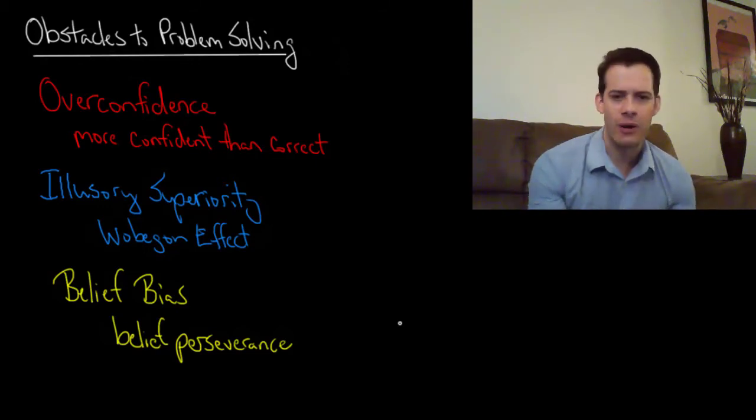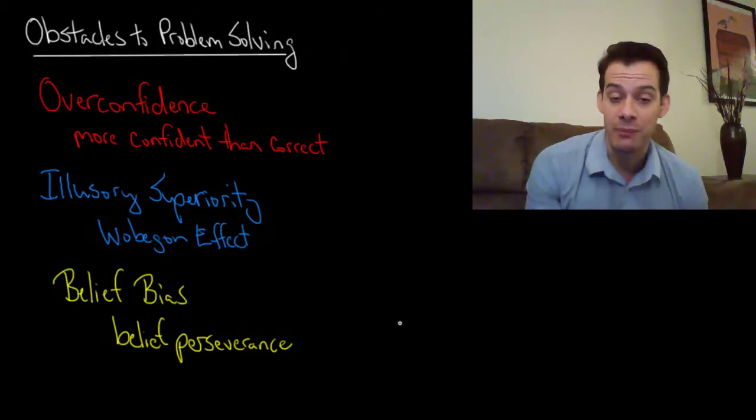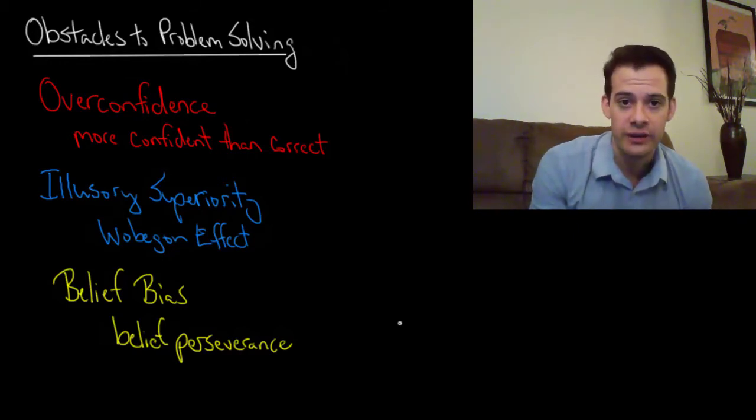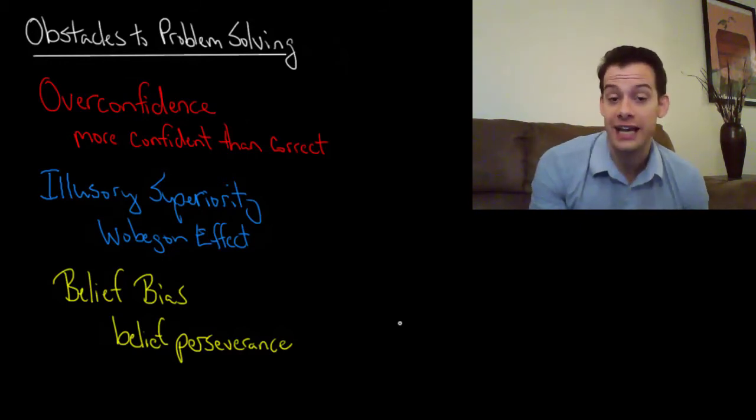So how can we go about reducing the influence of this belief bias? Well, one way comes from research by Charles Lord and colleagues. And what they did was they gave people a controversial topic where people probably already had some existing beliefs. And then they gave them evidence on both sides of the issue. And they wanted to see how this changed people's beliefs or whether it changed their beliefs.